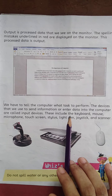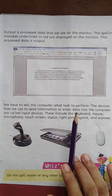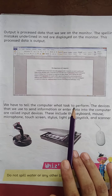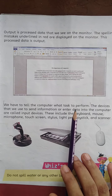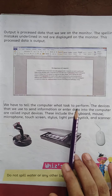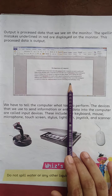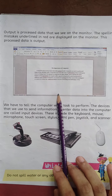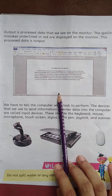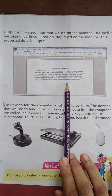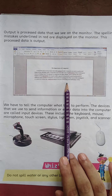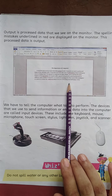When the data is processed and we see the result, that is the output. The monitor is an output device because it shows us the data we have entered through the keyboard and mouse. The monitor is our output device.